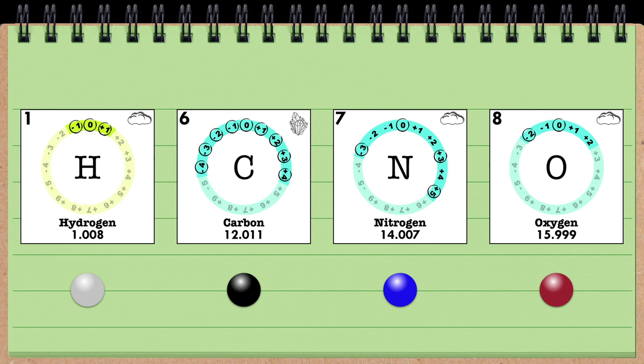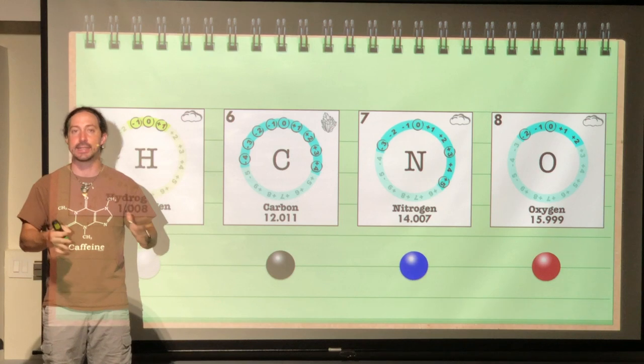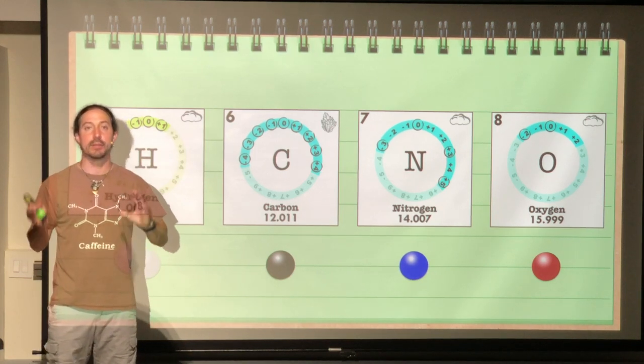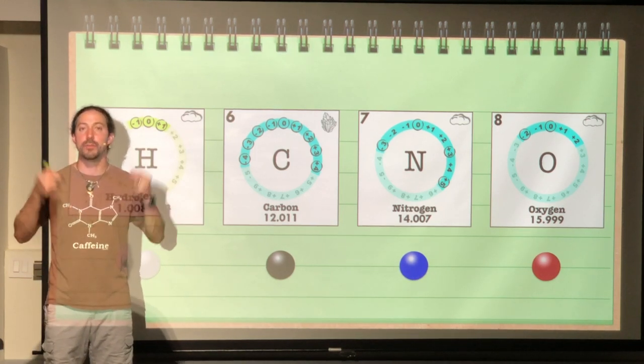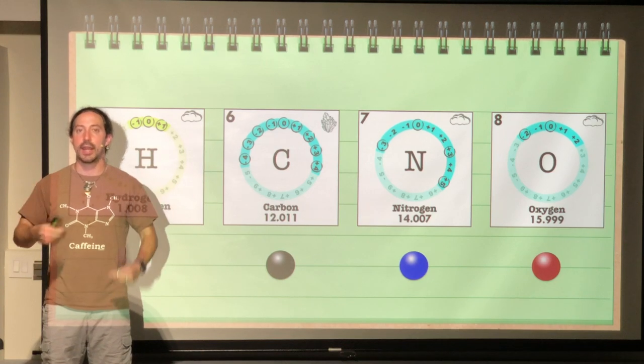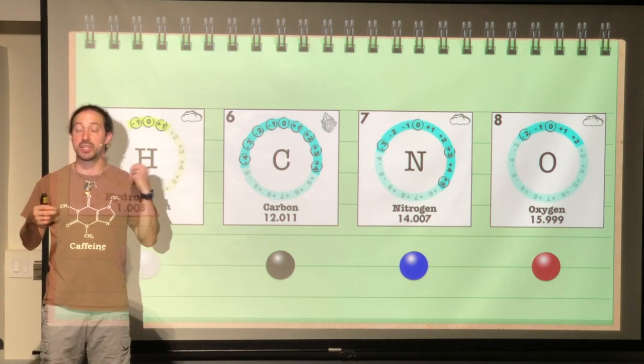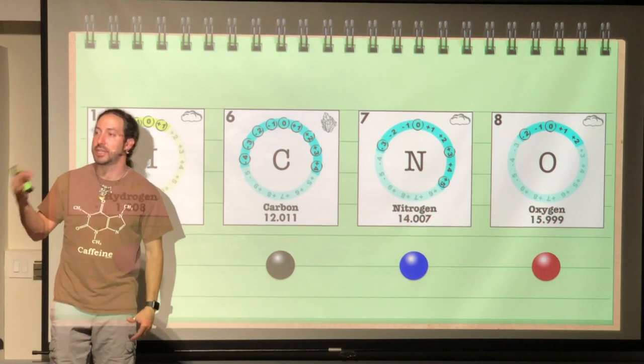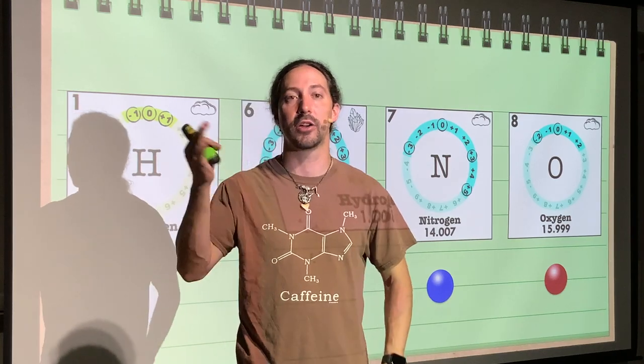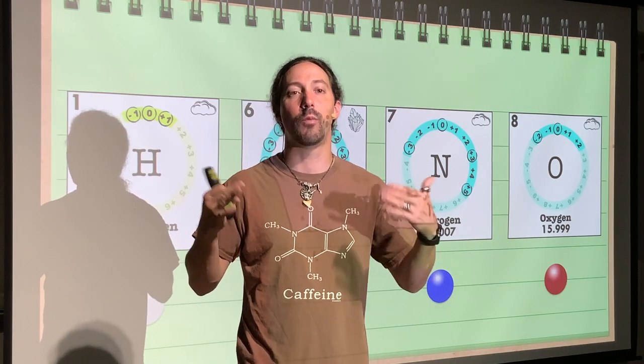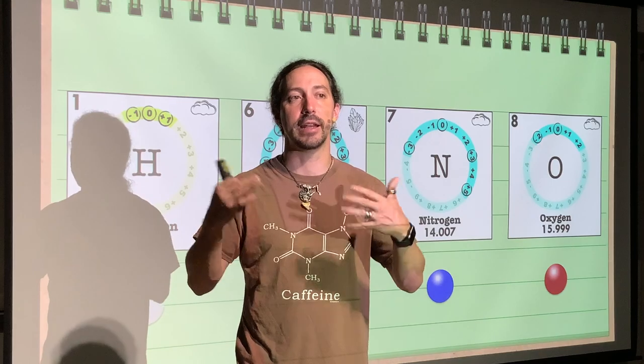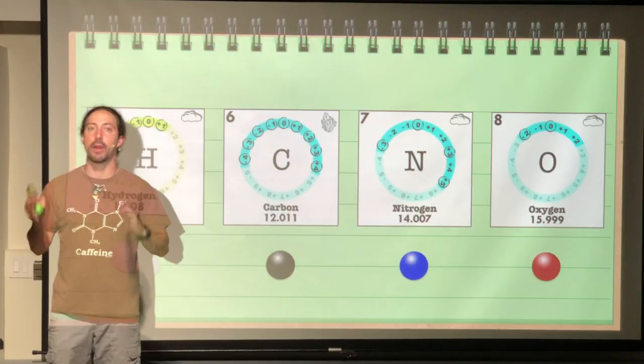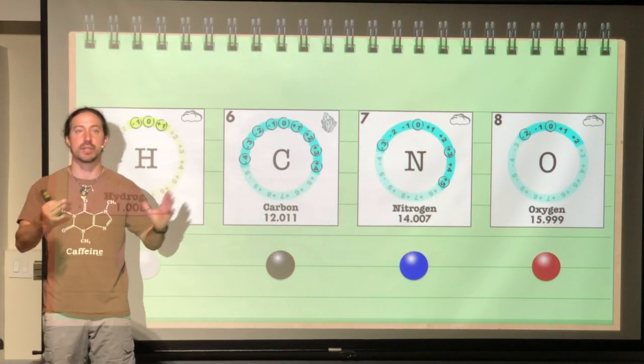And that's going to be important as we progress through all these lessons, because we will be keeping these colors consistent throughout. So anytime that you see a red sphere, you should immediately think oxygen. Anytime you see a blue sphere, you should think nitrogen. Anytime you see a black sphere, you should think carbon. And anytime you see a white sphere, you should be thinking that it is hydrogen. And that's going to be very important for you as we progress through this unit.